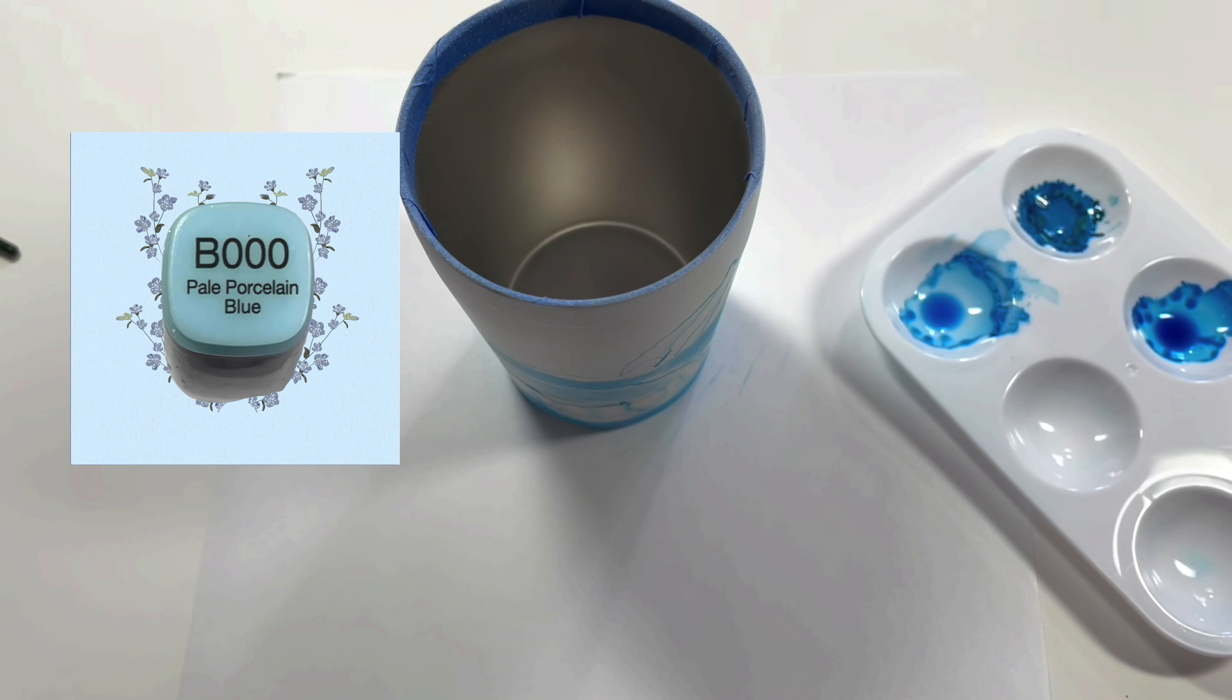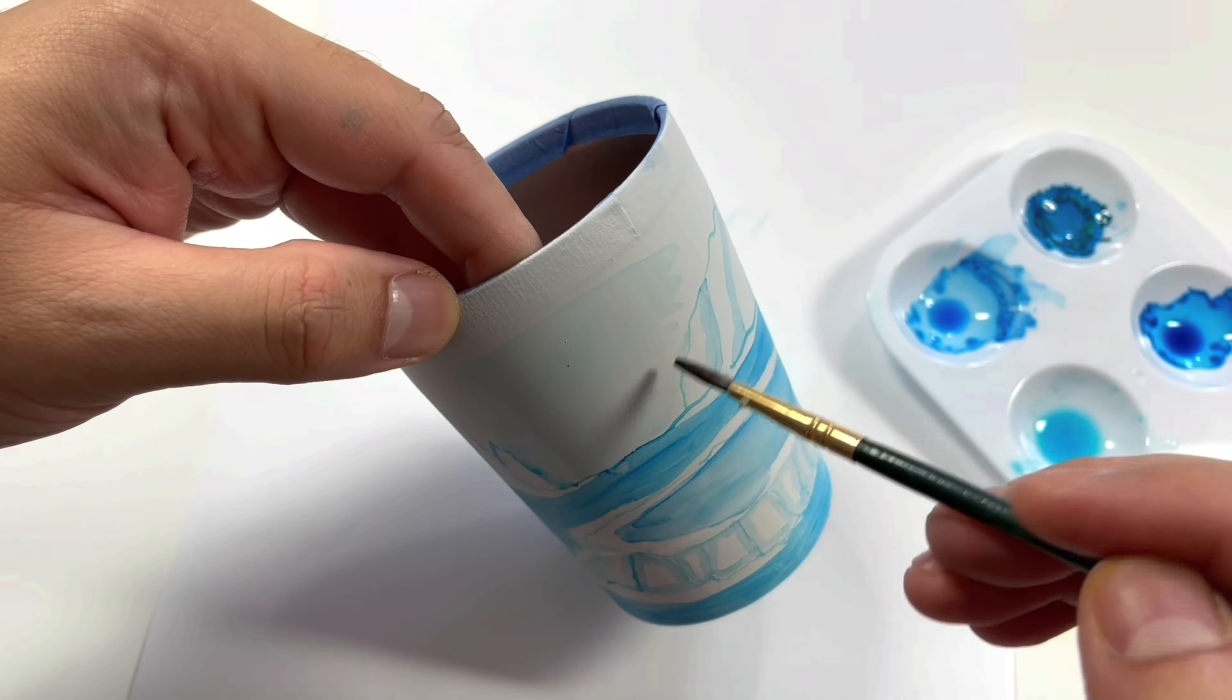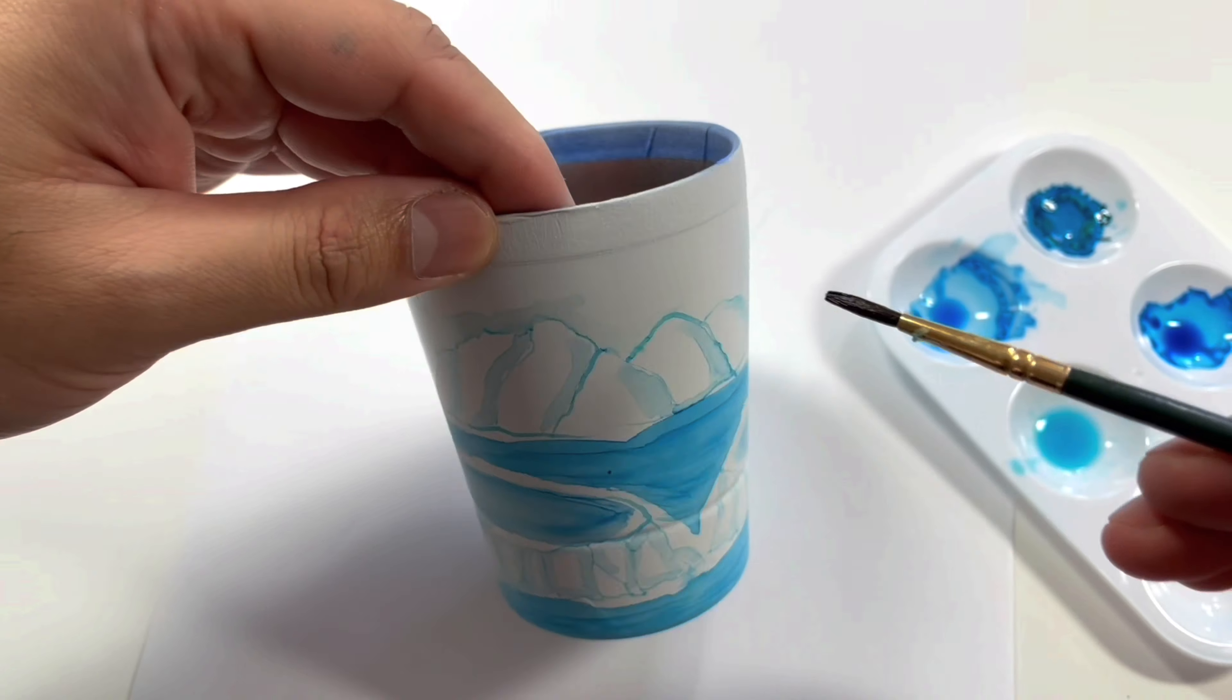The fourth shade is pale porcelain blue. I like this color, using it to color the pale sky and clouds in the background.